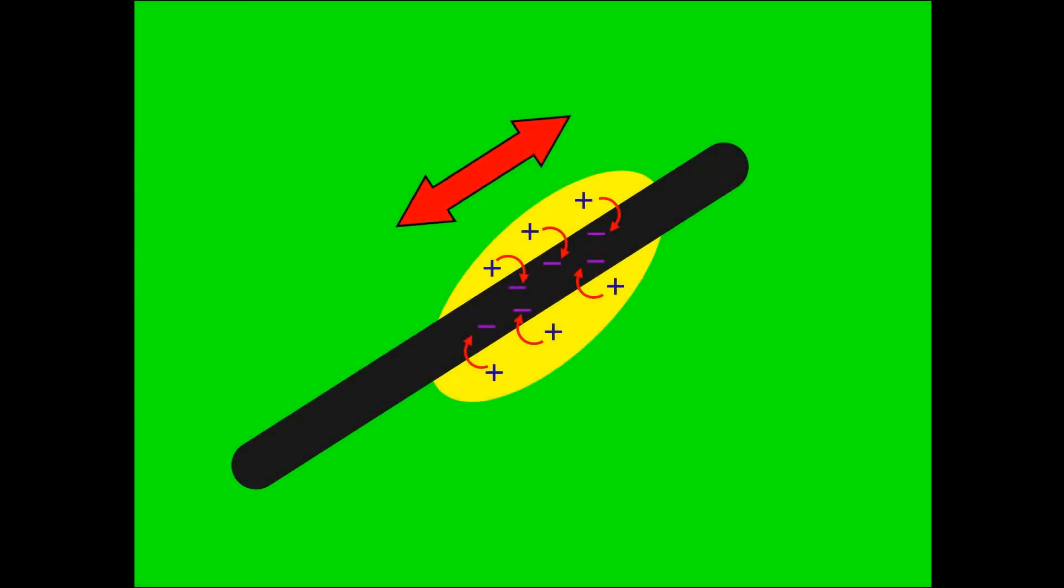Electrons are transferred from the cloth to the rod during electrification. The rod is charged negatively and the cloth positively by the electron transference.